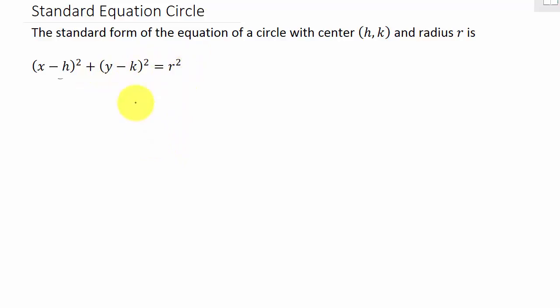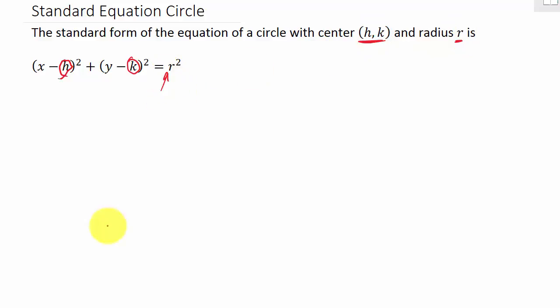To find the equation of the circle, all you have to remember is you need the center (h, k) and the radius r. We need to plug in for r, so we need to know what h, k, and r are. h and k are the coordinates of the center, and r is the radius.